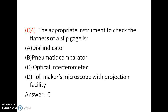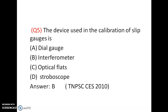The appropriate instrument to check the flatness of slip gauges is an optical interferometer. It is not a pneumatic comparator, dial indicator, or tool maker's microscope. The answer is C — optical interferometer.